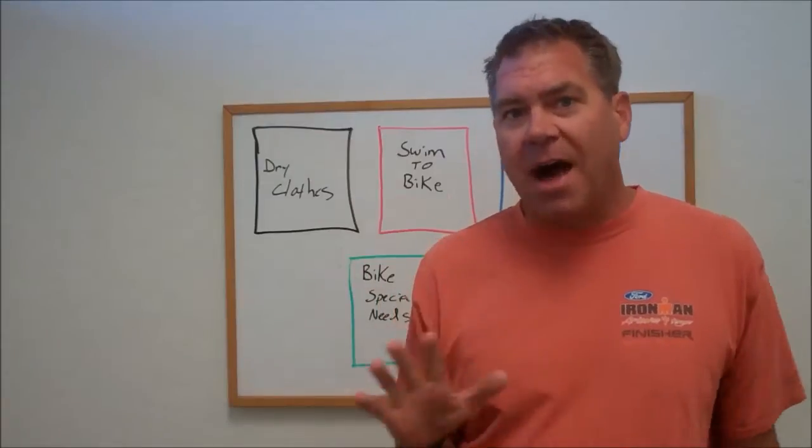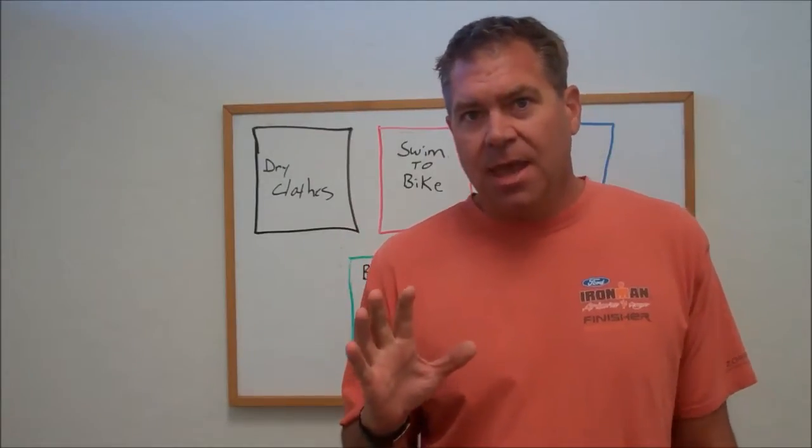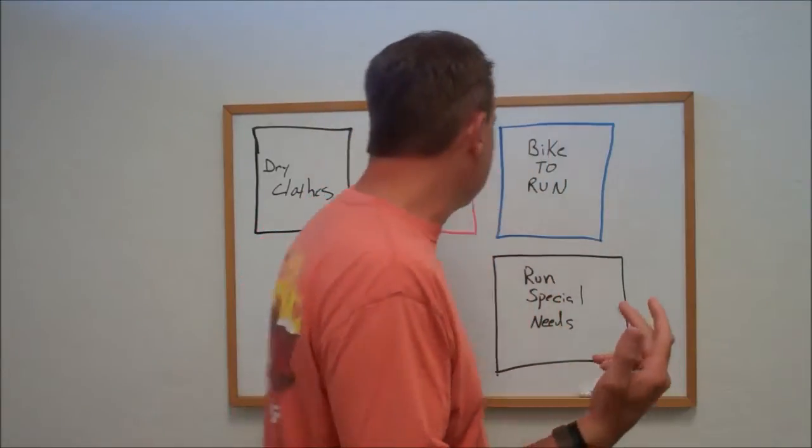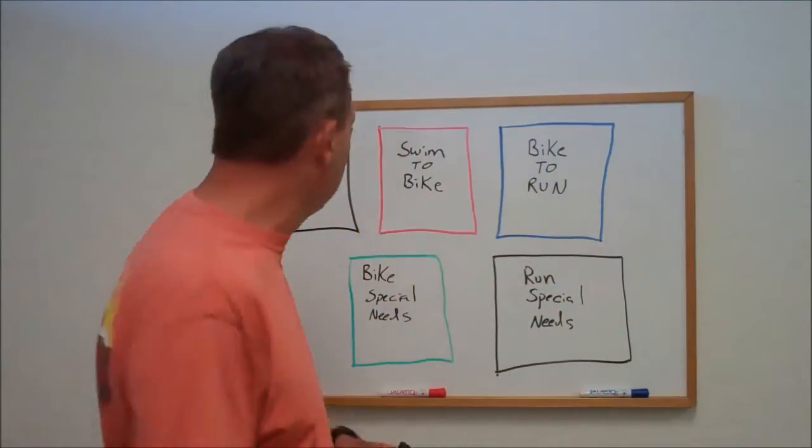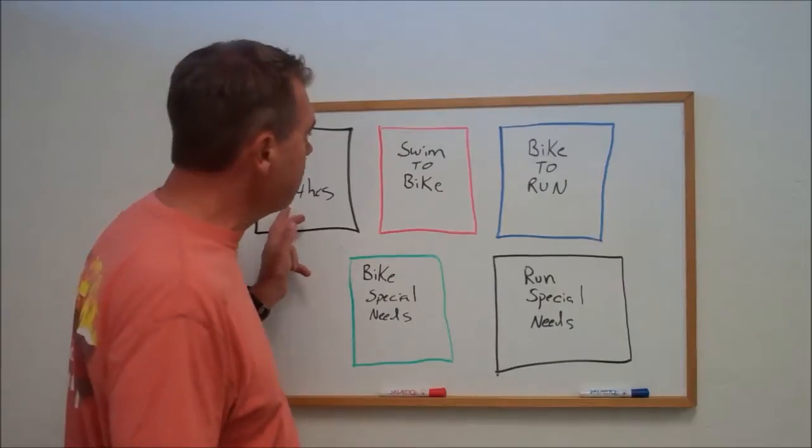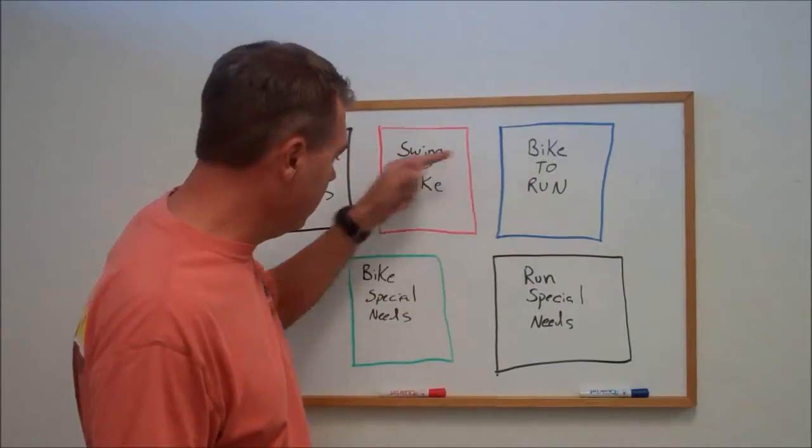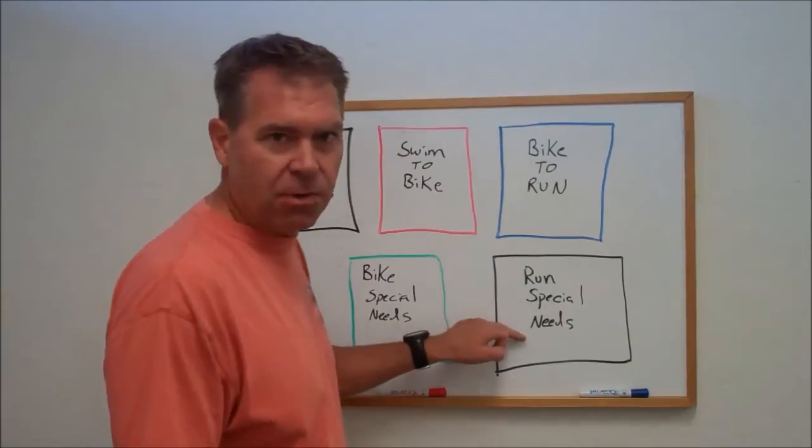When you go down to your packet pickup, they're going to give you five bags. And I'm going to talk a little bit about what they're for and what do you do with them. So firstly, the bags. One bag is a dry clothes bag, one bag is a swim to bike bag, bike to run bag, bike special needs and run special needs.